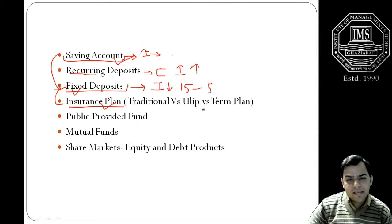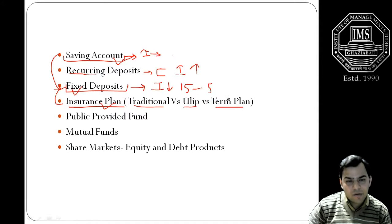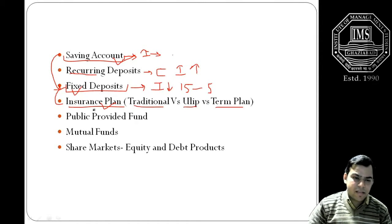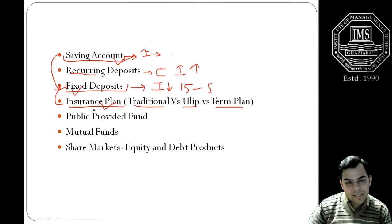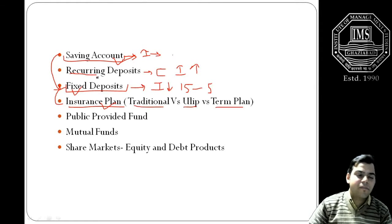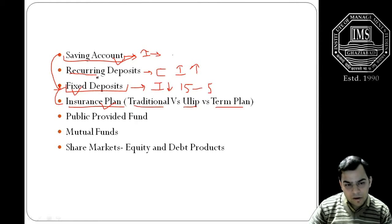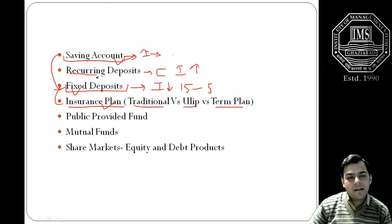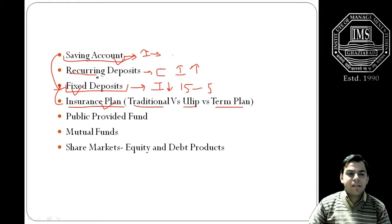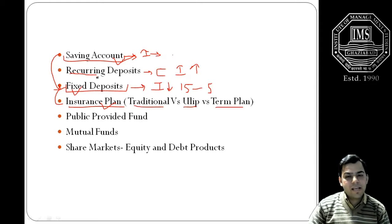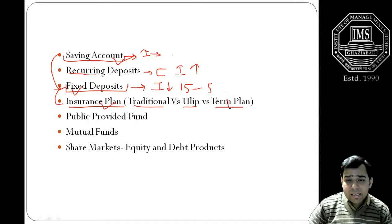These days it's very crucial for the family protection. This insurance plan can further be divided into following three categories: traditional plans, ULIP plans, and term plan. Let us try to understand. Insurance are basically developed as the product where primarily the person is looking to protect himself from the risk, but over a period of time certain kind of riders have been included.